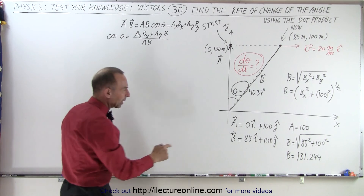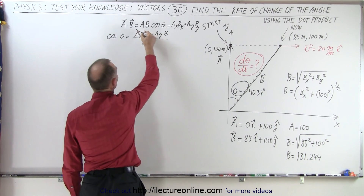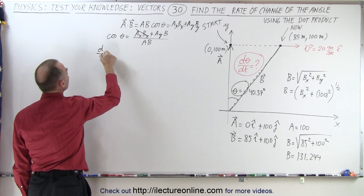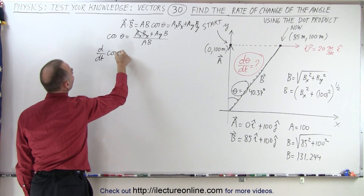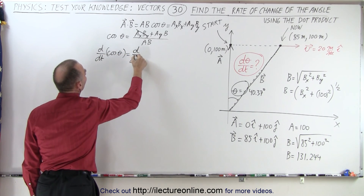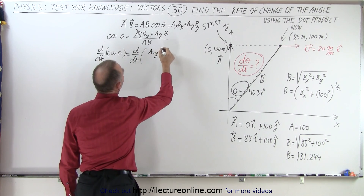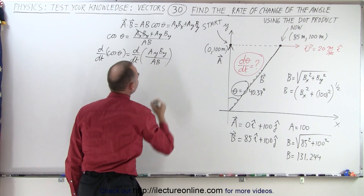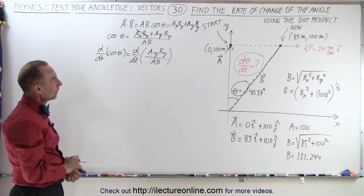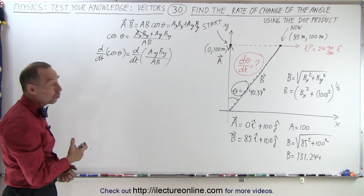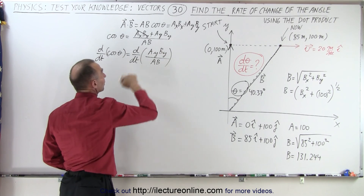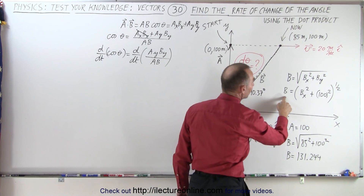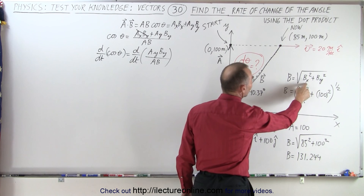But before we do that, we have to realize that A sub X is equal to zero, so this goes to zero, which means when we take the derivative with respect to time of both sides, we take the d/dt on the left side of the cosine of theta, and that equals the d/dt of the right side, which is equal to AY times BY divided by the magnitude of A times the magnitude of B. Now, AY is a constant, and so is BY. So both things in the numerator here are constants. In the denominator, A is a constant, but B is not.